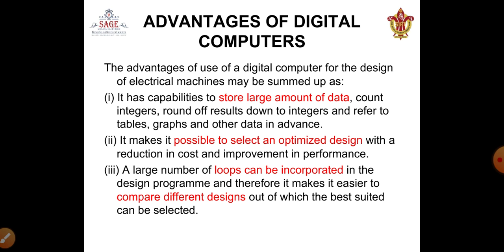There are obviously advantages of using a digital computer, enumerated under various subheadings. Computers can store large amounts of data — you don't need to remember various design tables and comparatives. All this information can be stored as data. You can select the best design out of various computer outputs and optimize it with respect to cost or performance. You can have many internal loops which can be run repeatedly, enabling faster performance, and these programming operations make it easy to compare different designs.